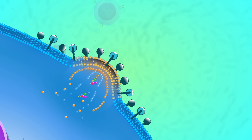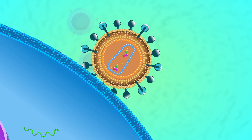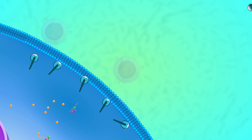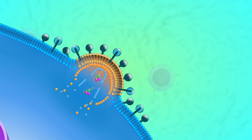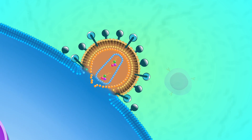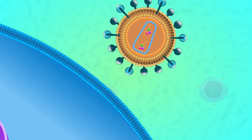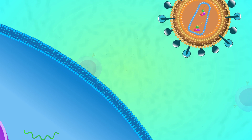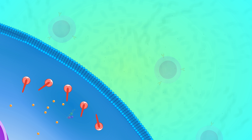HIV cycles through macrophages over a period of years and continues to multiply while doing little apparent damage to the body. Eventually, the gene that codes for the GP120 protein is altered by mutation.